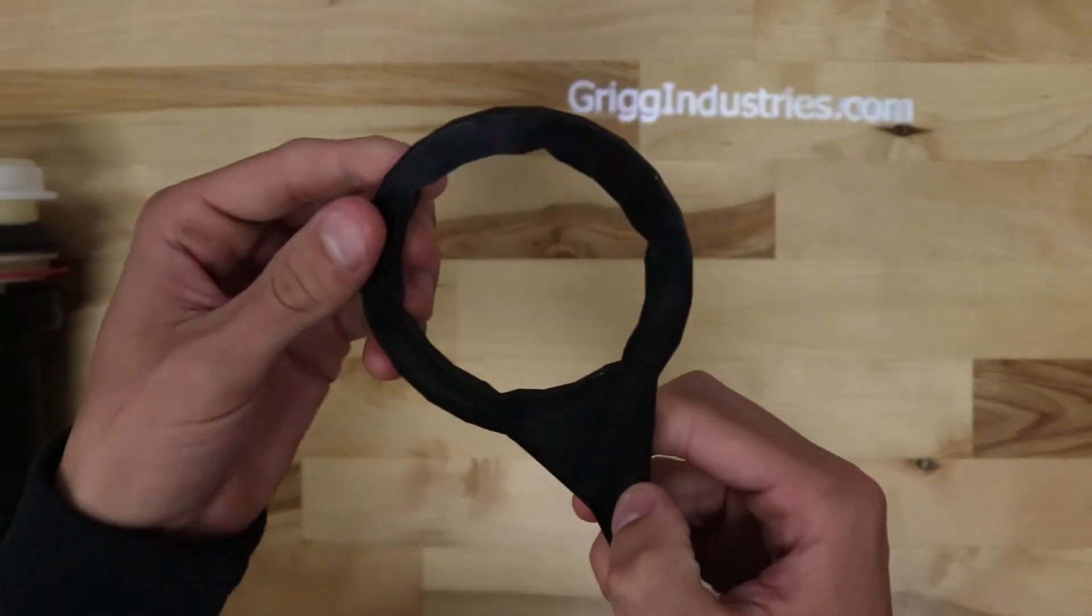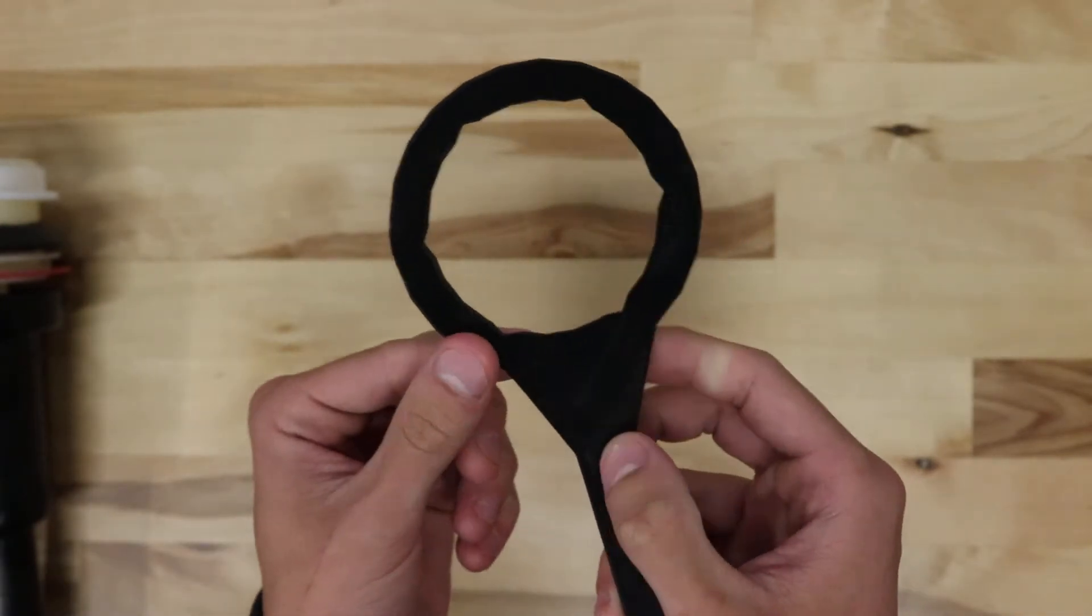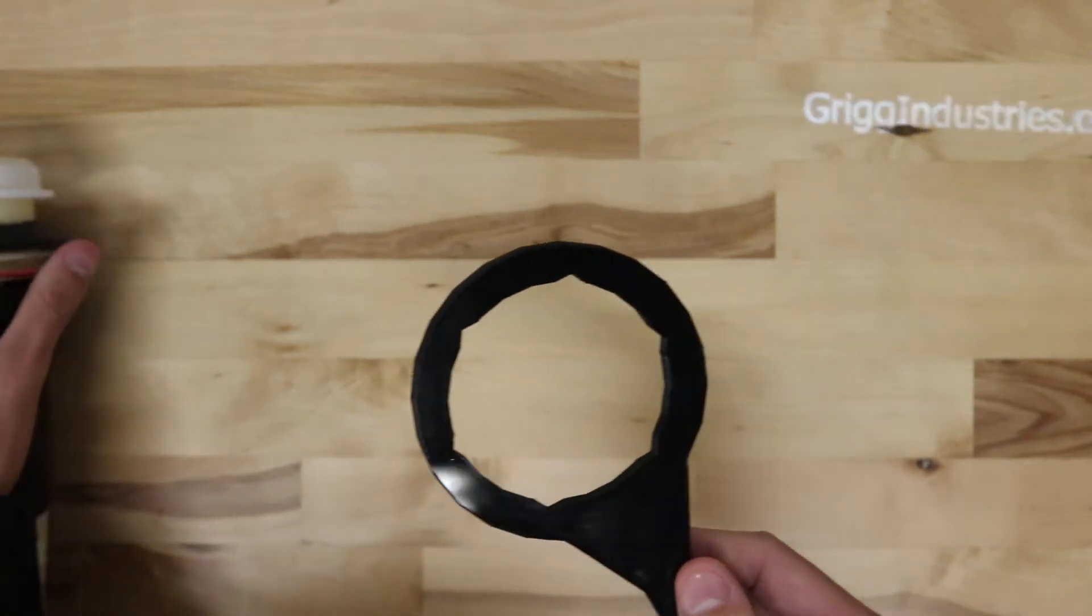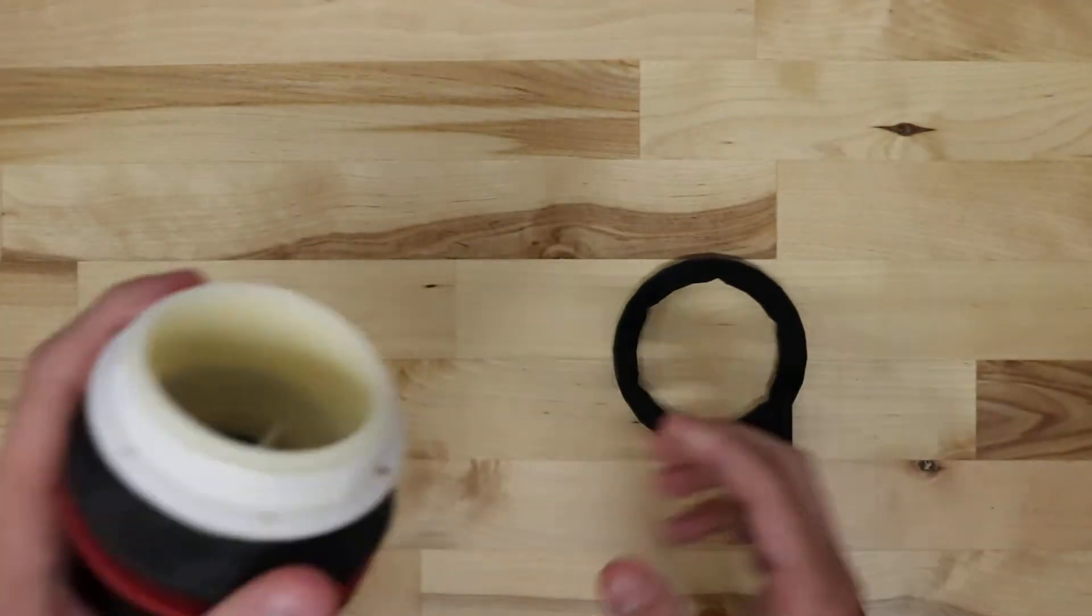As you can see here, there are little notches around it. That's to fit the nut that goes around the flush valve, for example.